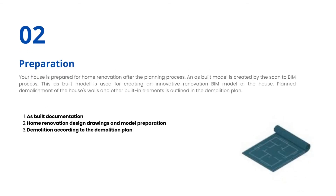Your house is prepared for home renovation after the planning process. An as-built model is created by the scan-to-BIM process. This as-built model is used for creating an innovative renovation BIM model of the house. Planned demolishment of the house's walls and other built-in elements is outlined in the demolition plan. Home renovation preparation checklist: Number 1 — As-built documentation. Number 2 — Home renovation design drawings and model preparation. Number 3 — Demolition according to the demolition plan.